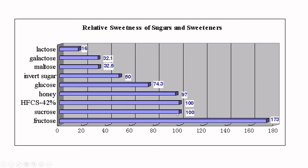If you compare sucrose to glucose using equal weight solutions — say 10 grams in 100 mL of water — sucrose is always the base point. Ten grams of HFCS-42, honey, or lactose in 100 mL water gives you relative sweetness profiles. Lactose gives approximately 16% of the sweetness of the same amount of sucrose. Glucose gives 74%, and invert sugar gives only about 50% of the sweetness gram for gram.